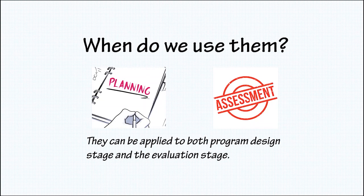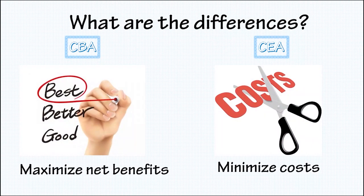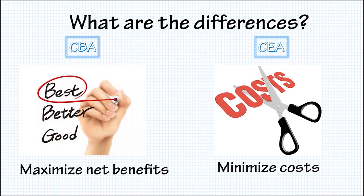Some say CEA is simply an alternative to CBA, but it is more than that. Let's compare their differences for a better understanding. First is the criteria of evaluation. CBA focuses on the net benefit, meaning the benefit over costs, and recommends choosing the option with the largest net benefit, no matter how expensive the initial cost is. While CEA takes into account both the costs and outcomes in a systematic way, estimating how much it costs to gain a unit of a certain outcome, aiming to find the least cost and minimize the cost of achieving a desired result.